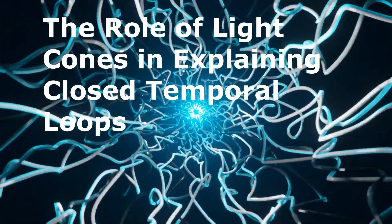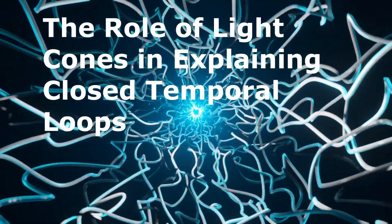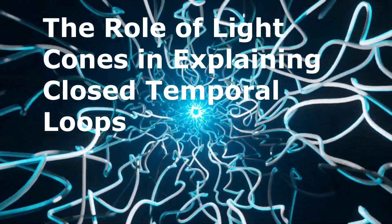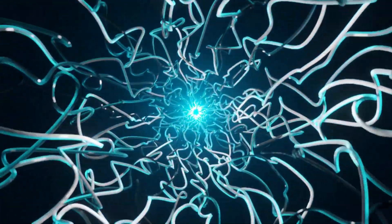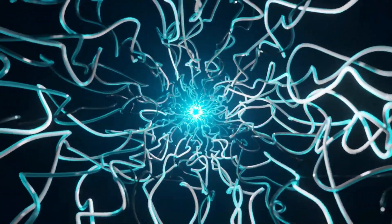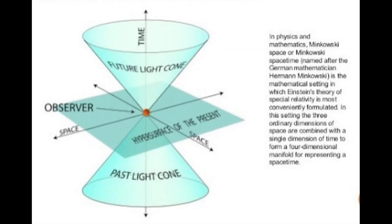Light cones are an important tool in understanding CTLs. A light cone represents all the possible paths a photon can take in space-time for a given event, with the tip of the cone being at the location of the event. The forward cone shows possible future light paths, while the backward cone shows possible past paths. In standard flat space-time, light cones are upright, reflecting a clear distinction between past and future.